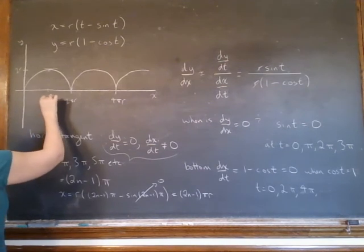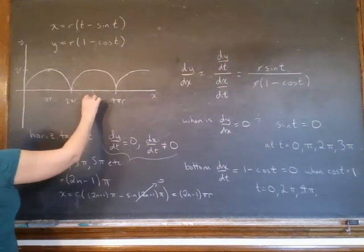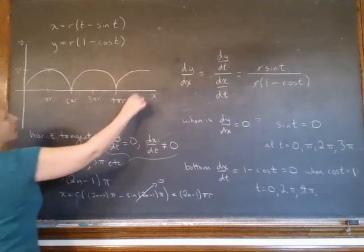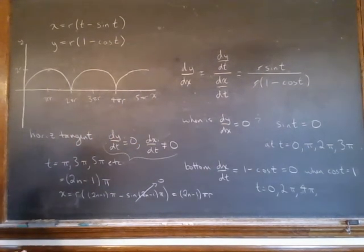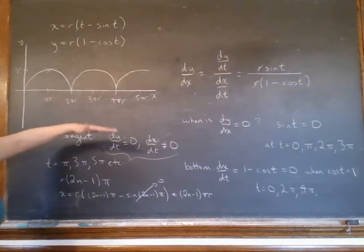The whole thing goes to 2 pi r, this is going to be pi r, 3 pi r over here, 5 pi r. So right in the middle is the top of that curve where we're going to have a horizontal tangent.